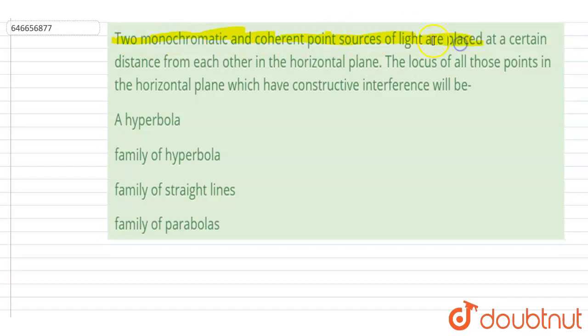point sources of light are placed at a certain distance from each other in the horizontal plane. The locus of all the points in the horizontal plane which have constructive interference will be - so, if you see, to have constructive